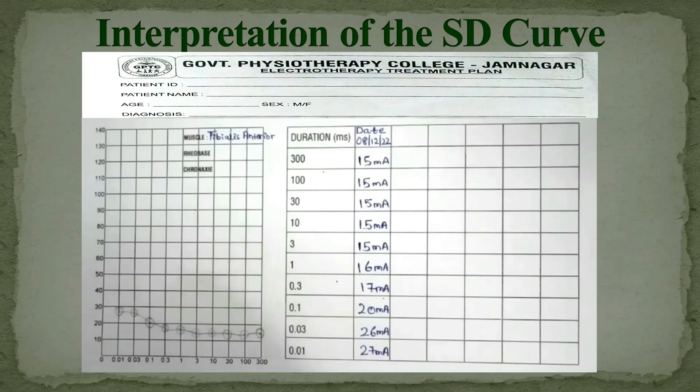The SD curve graph of tibialis anterior is slow-rising and parallel to the x-axis, which indicates that the tibialis anterior is completely innervated.